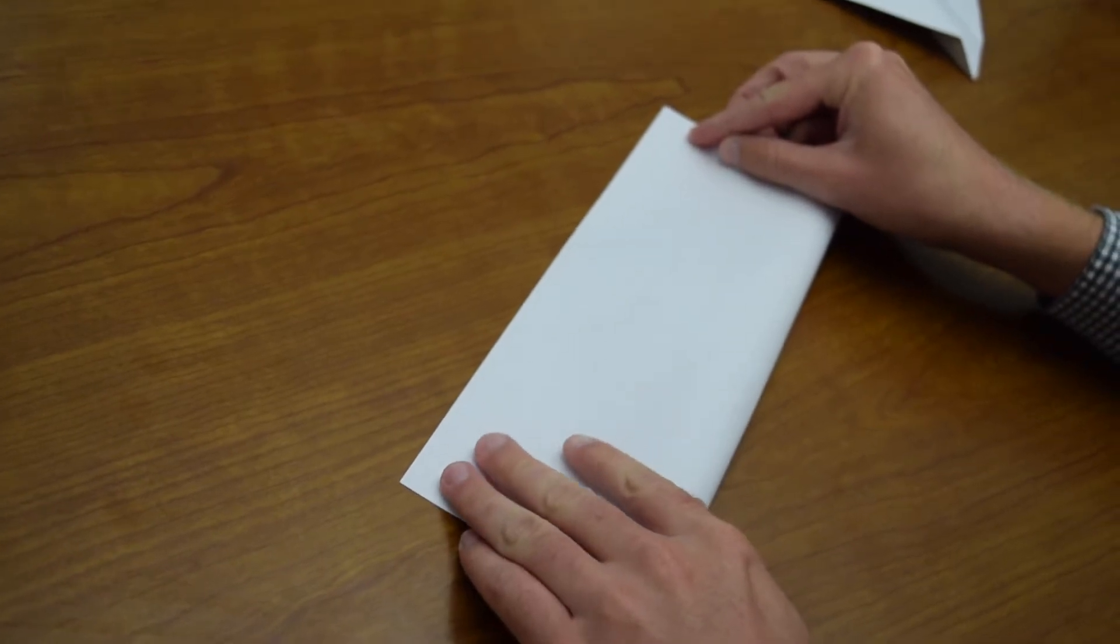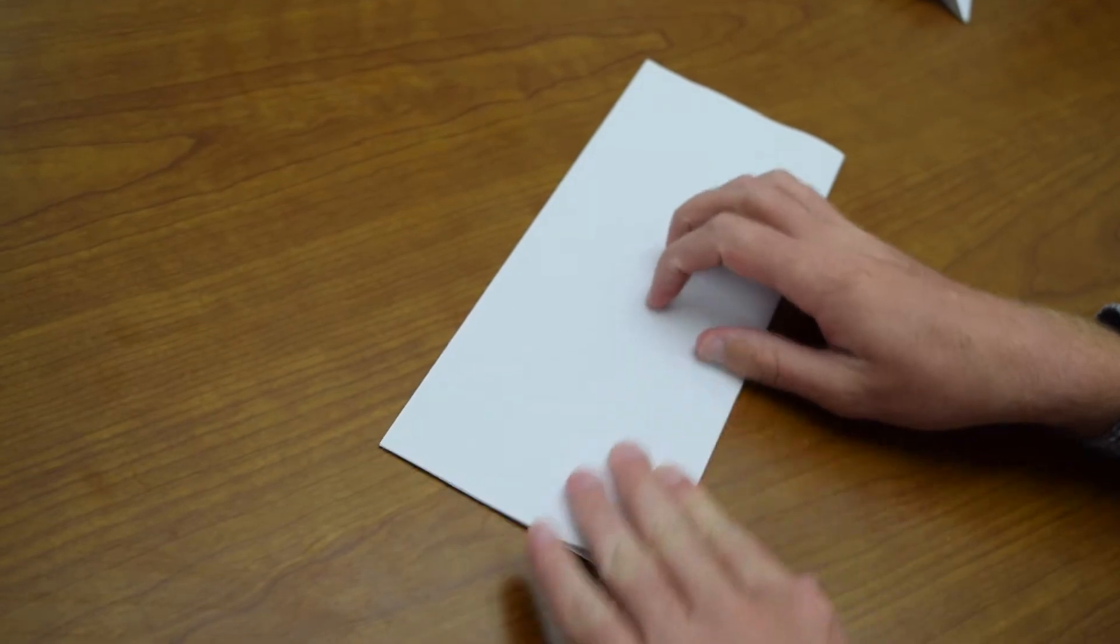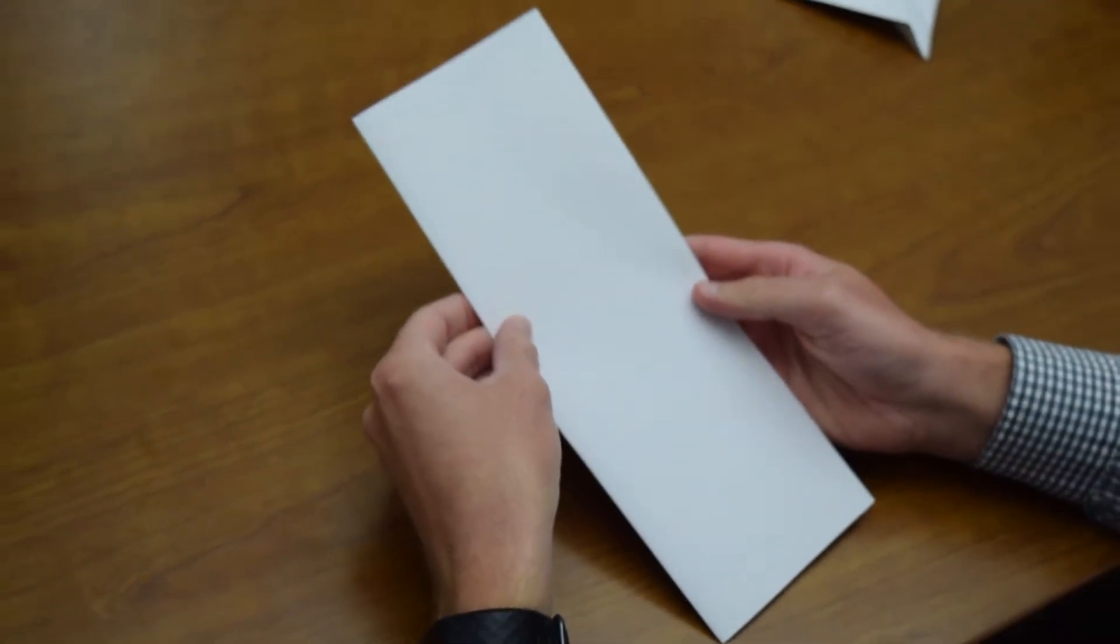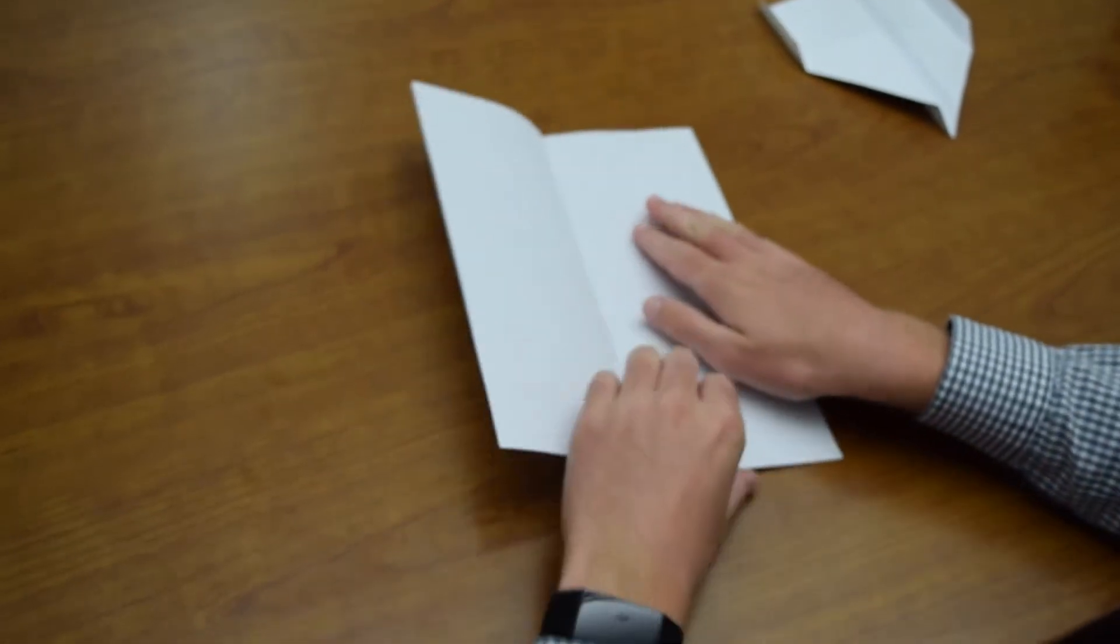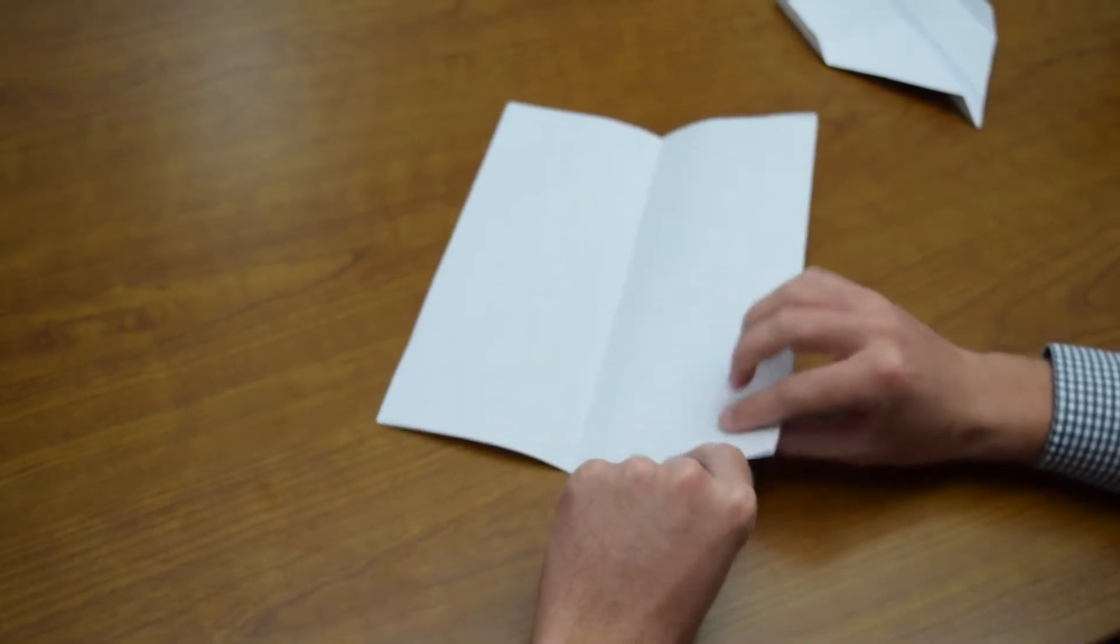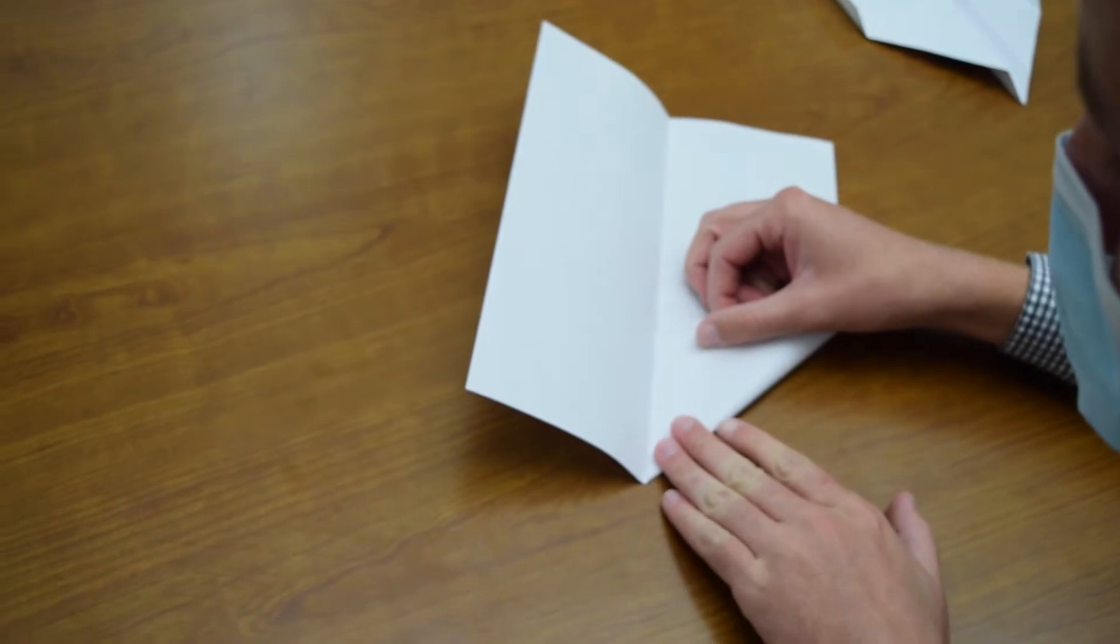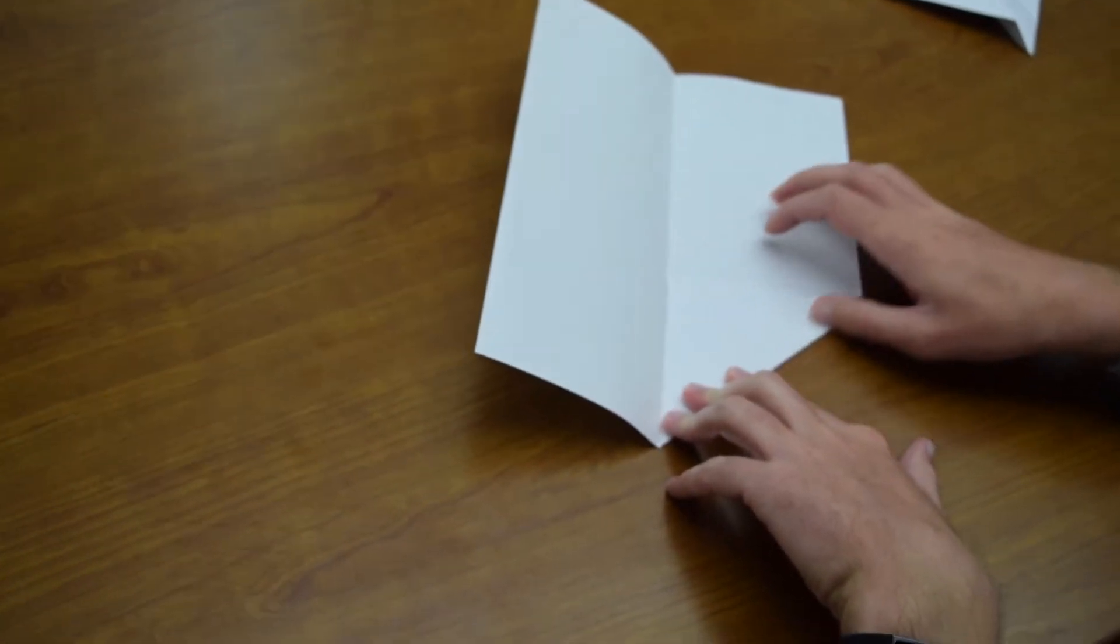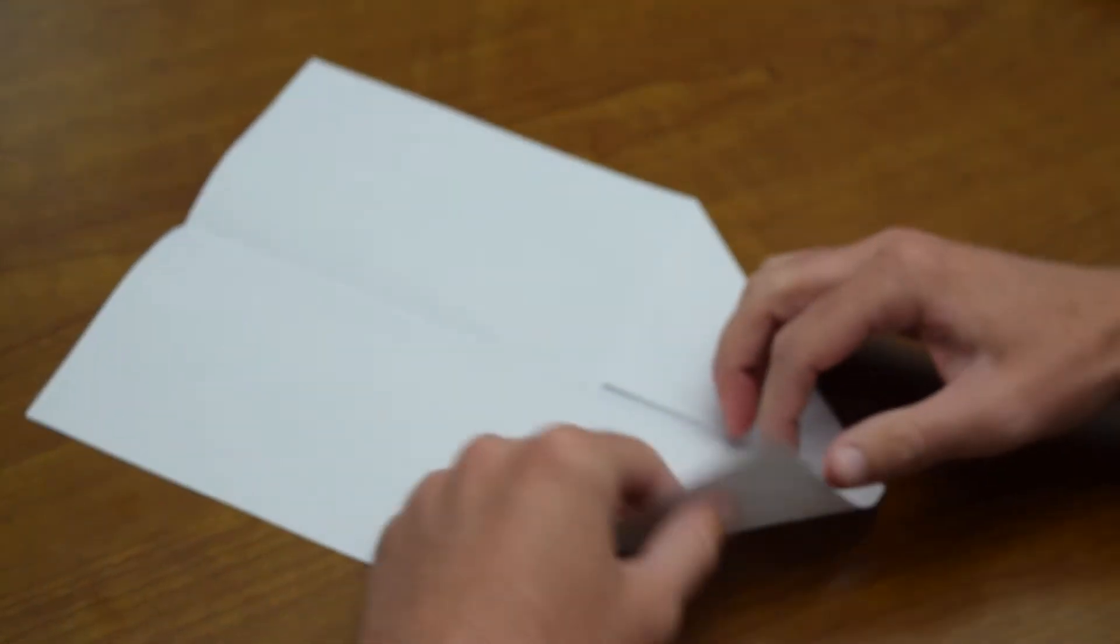After we make that crease we check to make sure that the corners did line up well and we open it up again. Once it's open again you take these corners and you fold them in a triangle right up to the crease, not over the crease but as close to the crease as you can get. We'll do the same thing on the other side.